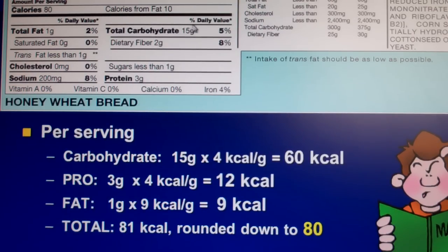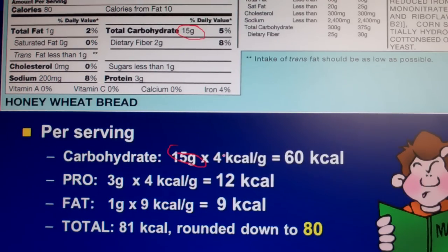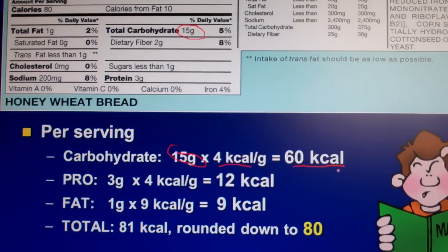Let's find our carbohydrates. Our total carbohydrates is 15 grams, as you can see right there. Now we already know that per gram of carbohydrate, we have 4 kilocalories of energy. So if you take 15 grams and multiply it times 4, you end up with 60 kilocalories from carbohydrates in this particular honey wheat bread.